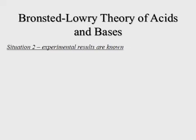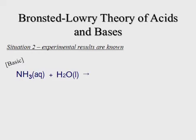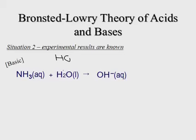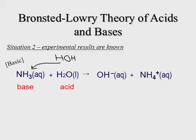In the second example, experimental results are known. Ammonia, NH₃, placed in water and tested with pH paper gives a basic solution. The basic molecule is OH⁻, but it didn't come from NH₃. It came from the water molecule — think of water as HOH. The H transfers from water over to the ammonia, changing NH₃ to NH₄+. So water acted as the acid (gave away a hydrogen) and ammonia acted as the base (accepted it).